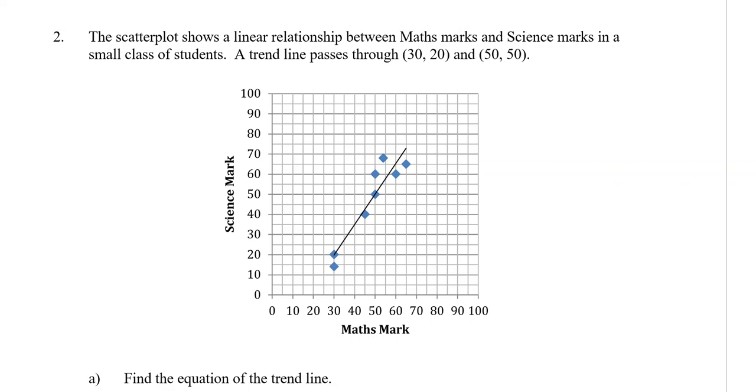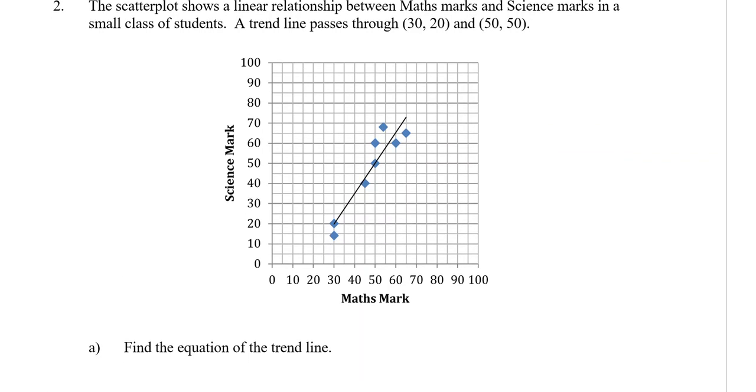Something like this can be more useful where the scatter plot is already drawn and the line of best fit is already drawn for you. The scatter plot shows the linear relationship between the maths marks and science marks for a small class of students. A trend line passes through the points (30,20) and (50,50). So when they drew that line of best fit, they made sure they went through two points, and those two points are the ones we're going to be able to use.